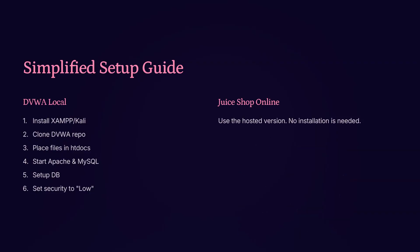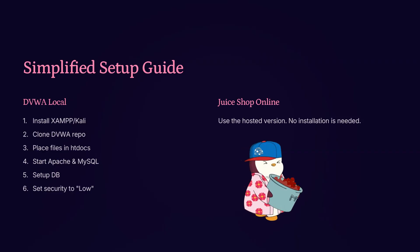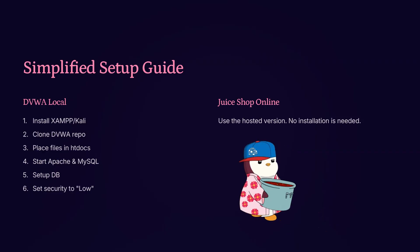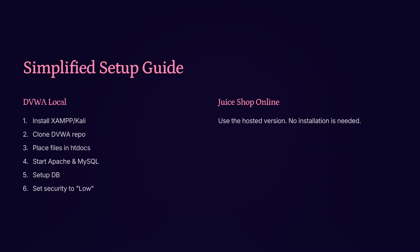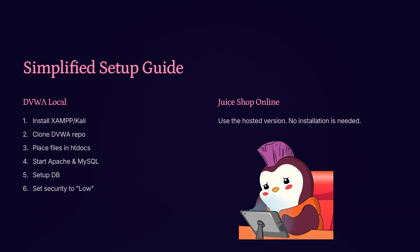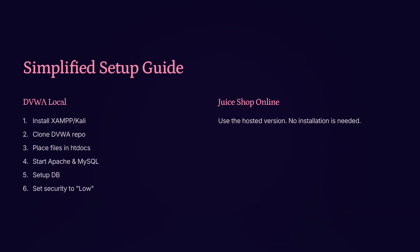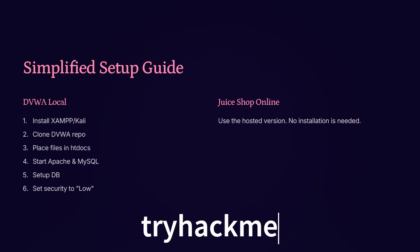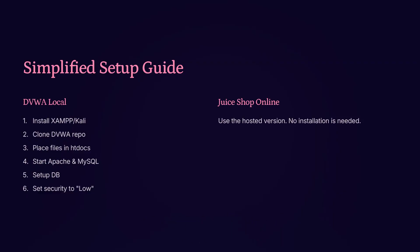This will allow the application to be intentionally vulnerable so that you can practice common attacks safely. If you prefer something faster, Juice Shop is a great alternative. You can use its hosted version directly from the browser without installing anything. Just go to the TryHackMe platform or the Heroku demo link, and you're good to go. Choose whichever option you're comfortable with — both will let you complete the assignment successfully.